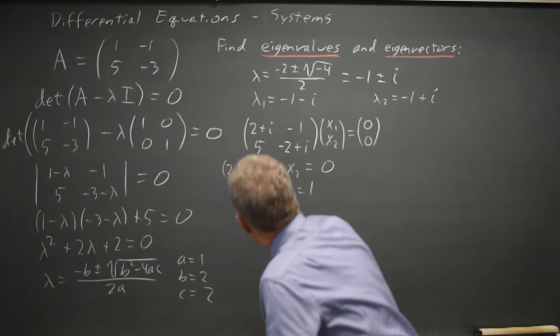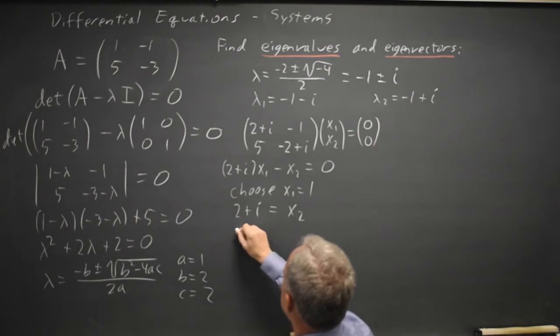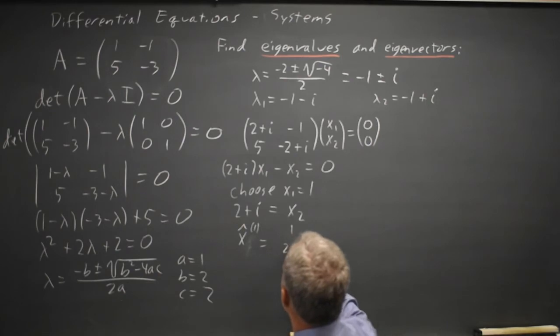If I'm doing this correctly, the second row is a multiple of the first row, and so I have to make an arbitrary choice, and that gives me my vector x, the vector [1, 2 plus i].